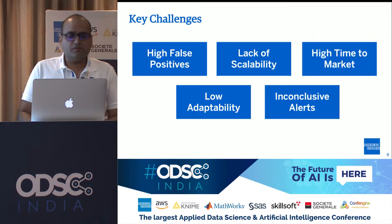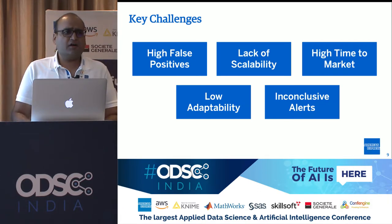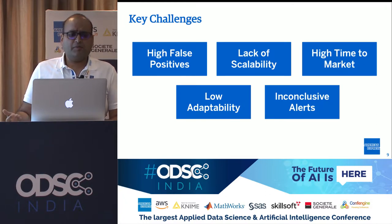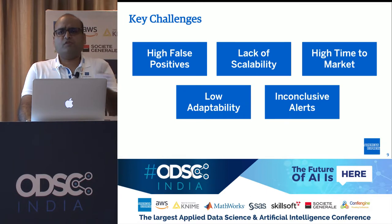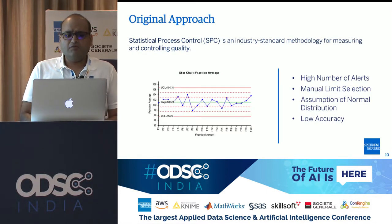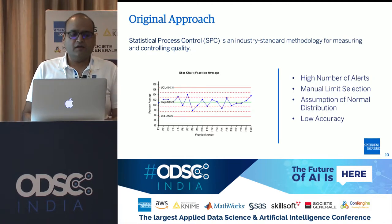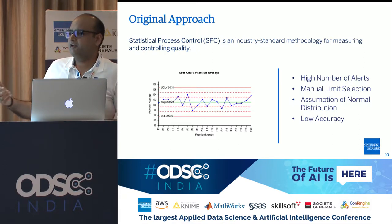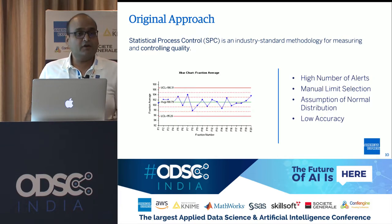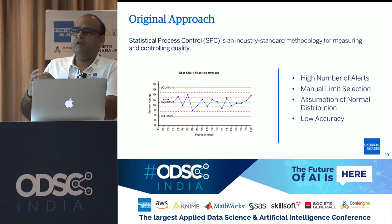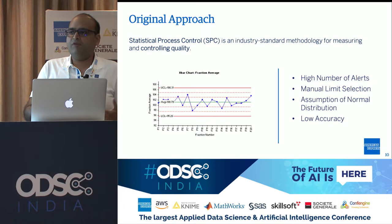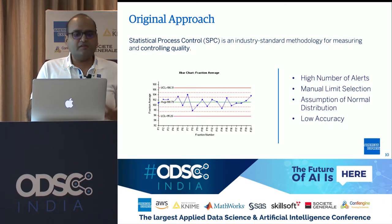To summarize the challenges we are facing: high false positives in data, lack of scalability, very high time to market, low adaptability, and a lot of inconclusive alerts. Our original approach used multiple statistical functions — industry-standard methods giving us UCL and LCL limits to detect anomalies. What was happening was that we were getting a lot of noise and a high number of alerts. We had to tune every time series differently because each has different behavior, which took a lot of time. Users were constantly requesting changes like 'adjust my time series to plus-minus three sigma.' And there was not a normal distribution for every time series — that was another problem.